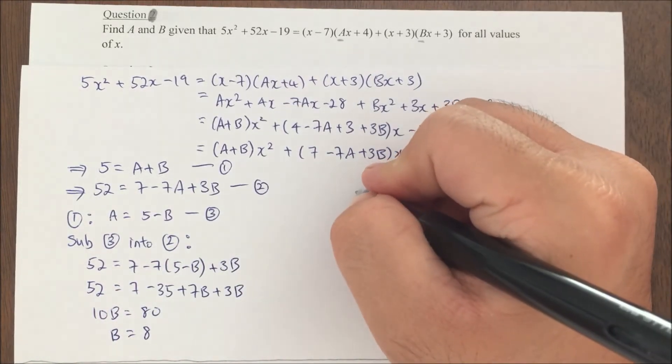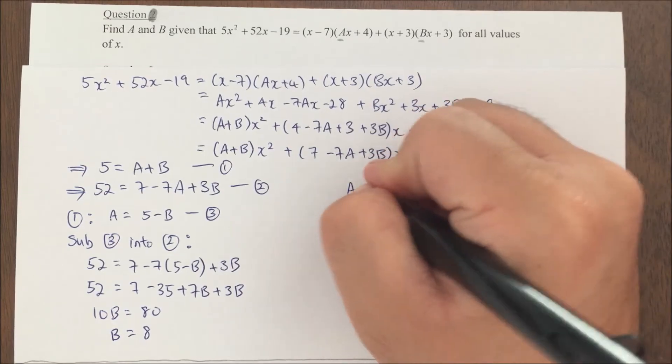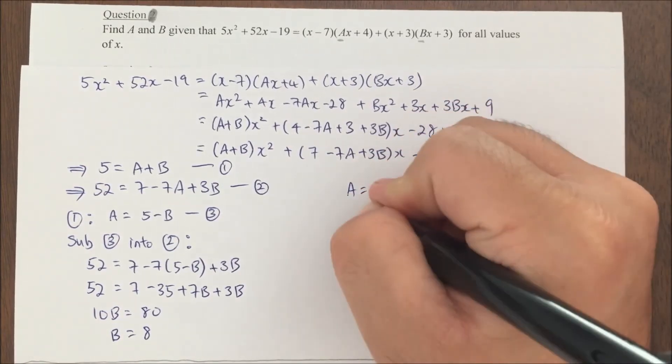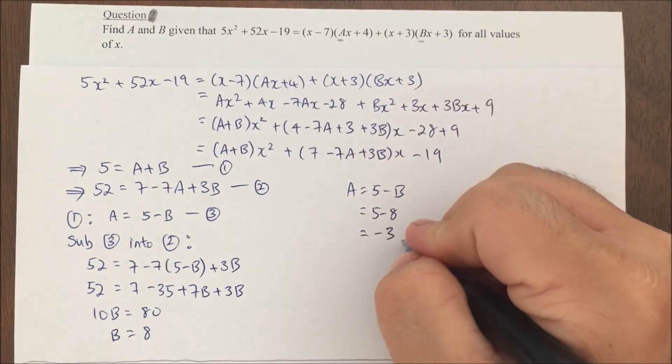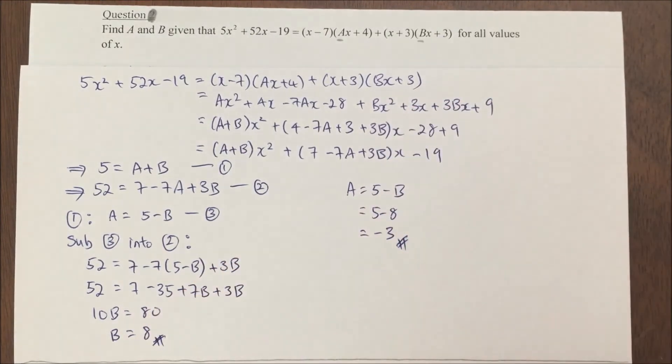Now I have to solve for my a. So a equals 5 minus b, which equals 5 minus 8. So my a equals negative 3. Now I have my 2 answers, a and b.